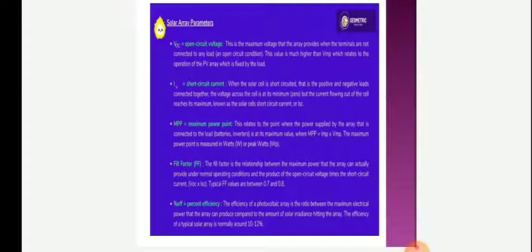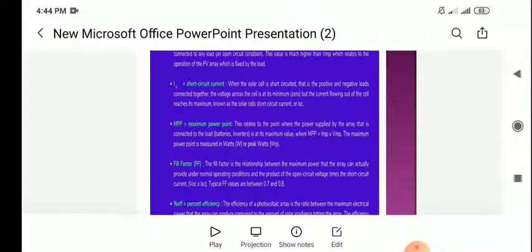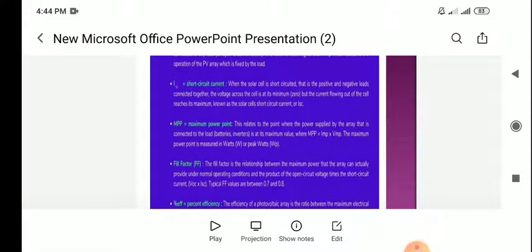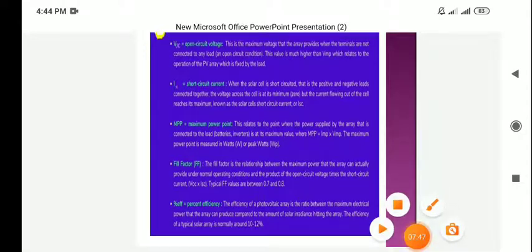Percentage efficiency: The efficiency of the photovoltaic array is the ratio between the maximum electric power that the array can produce compared to the amount of solar irradiance hitting the array. The efficiency of the typical solar array is around 10 to 12 percent.